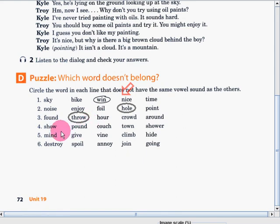Number four: show, pound, couch, town, shower. Great. Show doesn't have OW sound.